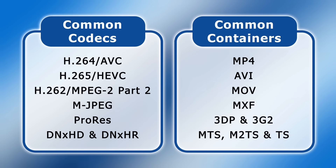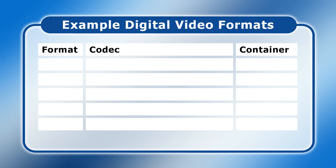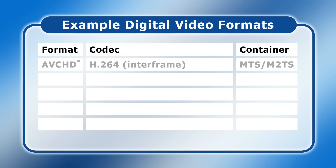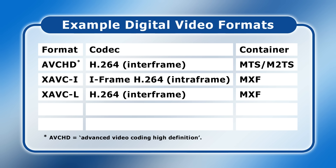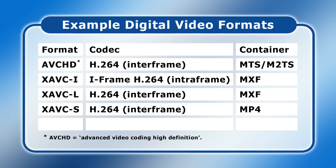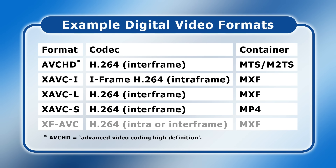The codecs and containers we've just looked at can be combined to create a wide variety of video formats, some mainly used for recording and others for the delivery of final video files. When it comes to acquisition, videos recorded in the still relatively popular consumer format AVCHD — which stands for Advanced Video Coding High Definition — use the H.264 codec and either an MTS or M2TS container. The XAVC-I and XAVC-L formats used on many Sony cameras store H.264 video in an MXF container, while the closely related XAVC-S format uses an H.264 codec and an MP4 container. Many Canon cameras shoot in a format called XF-AVC, which also uses the H.264 codec and an MXF container.